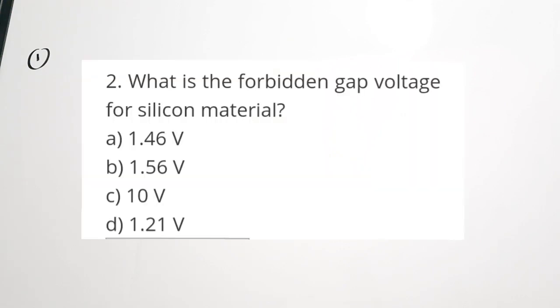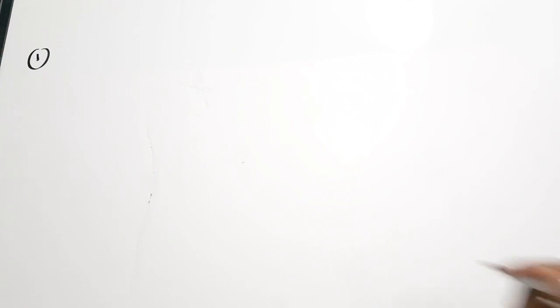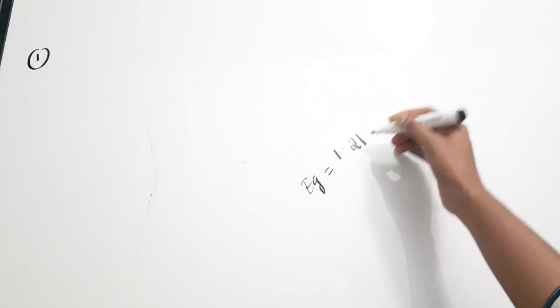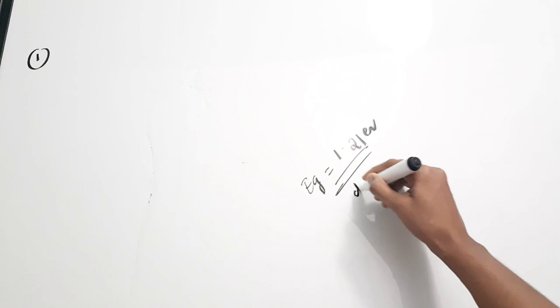Questions you will be seeing on the board while explaining. The first question is: the forbidden gap voltage for silicon material is dash. This is asking the forbidden energy gap, or the gap between the valence band and the conduction band. The EG for silicon is 1.21 eV. The correct answer is option D.